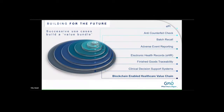We started with EPI and are building additional layers: anti-counterfeiting checks, batch recall — which wouldn't replace existing processes but would be an addition, allowing recall at the batch or serial number level — adverse event reporting from the patient perspective, electronic health records, finished goods traceability, and clinical decision support systems. Ultimately, we want to get to a blockchain-enabled healthcare system. The pharma companies would not necessarily be involved in every single one of these, but the idea is to build a platform that would allow it to occur.